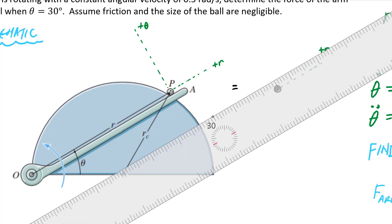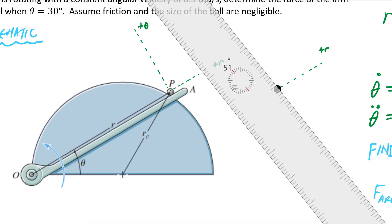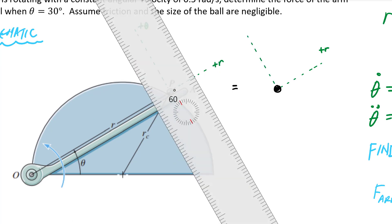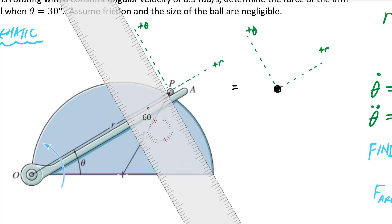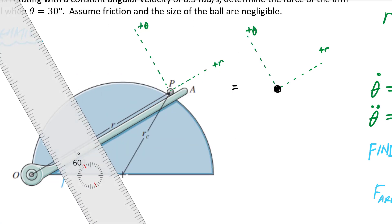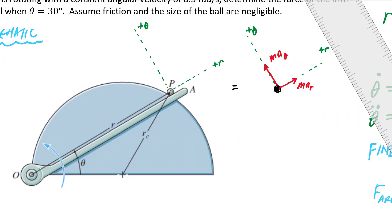On the other side of the diagram is my inertial diagram. The inertial components always point in the positive sense, so this will be m·a_r and here will be m·a_theta.